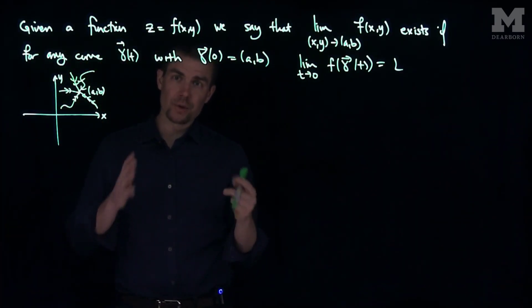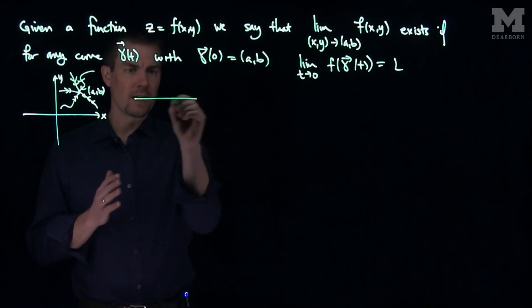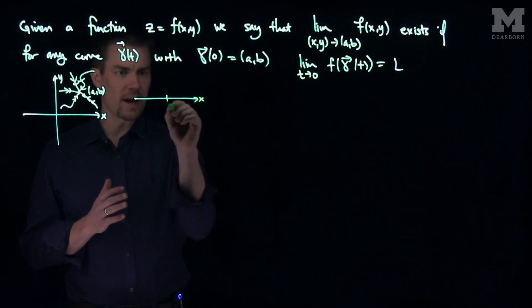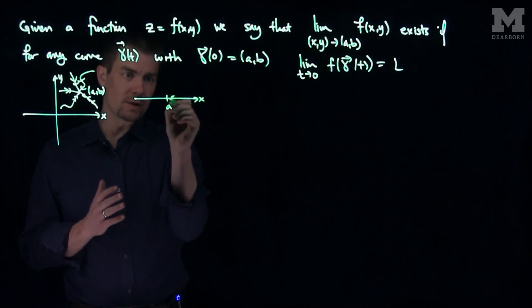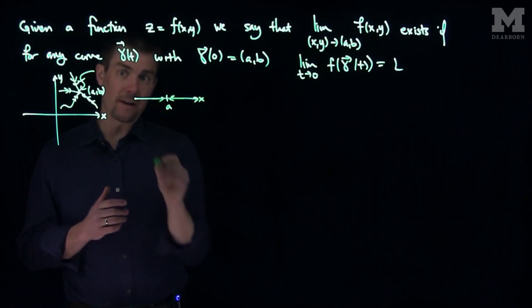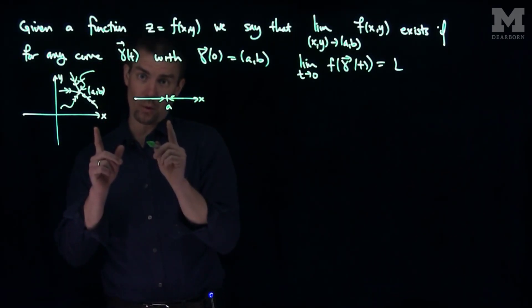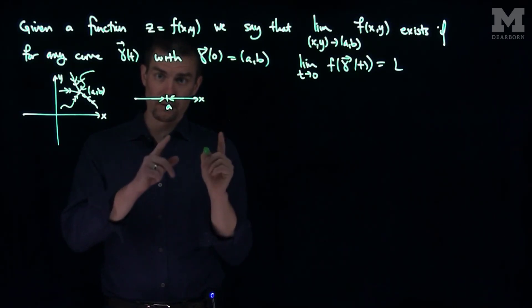So an analogy within calc 1: in calc 1, if you had a point on the x-axis and you had x equals a, there's only two ways you can get to a. You can get to a from the right, or you can get to a from the left. So you need the right limit and the left limit being equal for the limit to exist for a function of one variable.